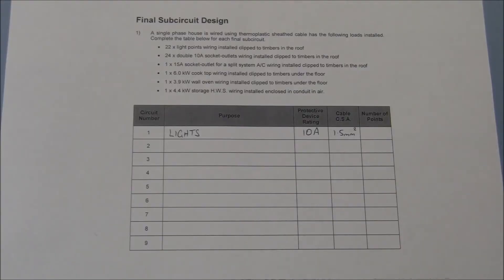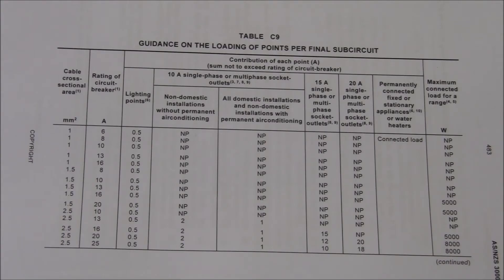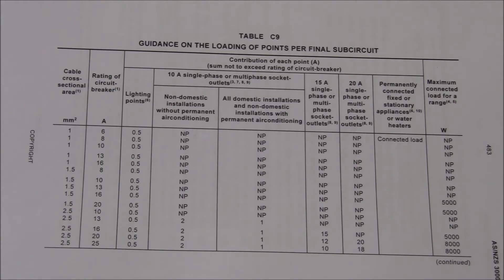Next, I'll refer to table C9 to see how many points I can put on a circuit. Table C9 provides guidance on the loading of final sub-circuits. For a 1.5mm squared cable with a 10 amp circuit breaker, each lighting point contributes 0.5 of an amp towards a total. Therefore, I can put a total of 20 lighting points on each circuit. As my installation has 22 lights, it'll exceed that. It's my preference to have two lighting circuits, so I'm going to allocate circuits 1 and 2 to lights with 10 amp breakers and 11 lighting points each.